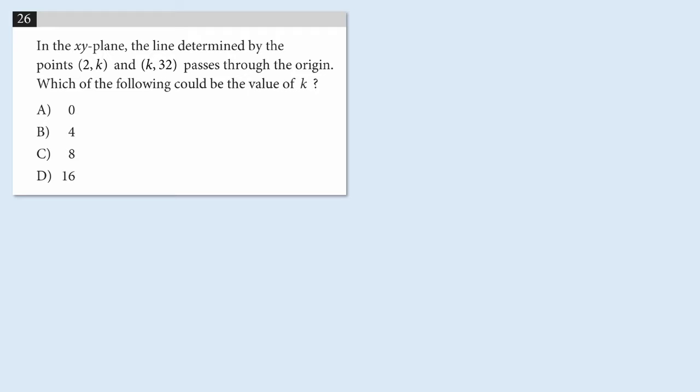Okay, so let's have a look at this. We have a line, and there are three points that lie on the line. We have (2,k), (k,32), and the origin. And I love the origin because its coordinates are (0,0), and that makes it easy to work with.